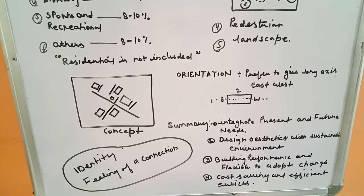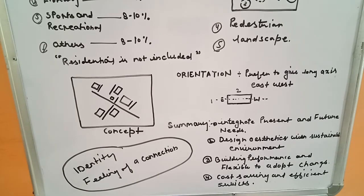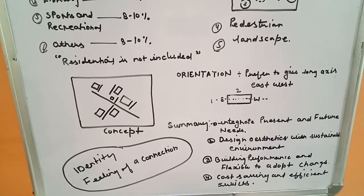In summary, we should integrate present and future needs in our design, and balance design aesthetic with a sustainable environment. We must follow sustainable measures and features as required by bylaws or green building systems. Building performance and flexibility to adopt change is also critical — we consider how the building will perform after completion and how the site will operate in terms of operations and maintenance after the construction process.